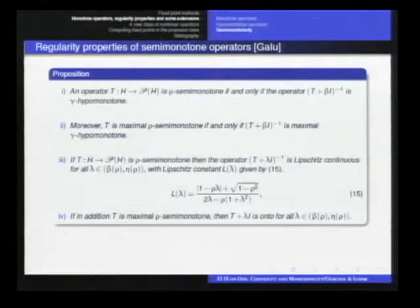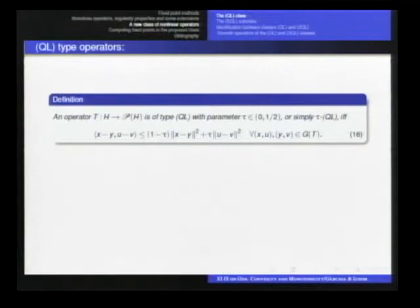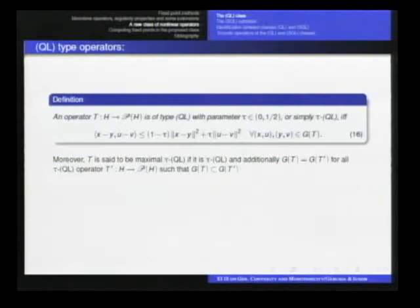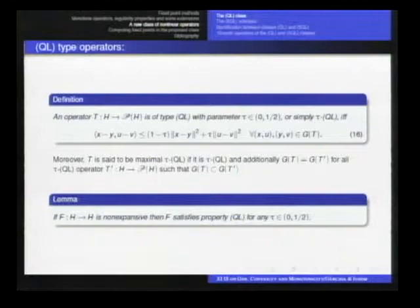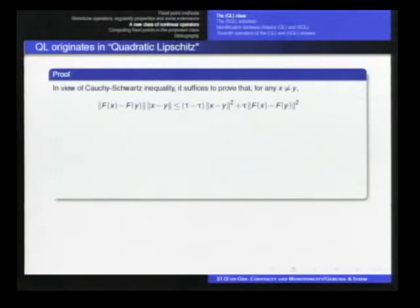Well, I think I have to move forward quickly. So, here is the class. We're saying that the operator, set-valued operator T is QL with some parameter tau if it satisfies this property here, which is a strongly convex combination of the distance in primal and dual variables. The same for maximality, and one lemma. If F is non-expansive, then F satisfies property QL for any tau in the interval zero, one over two.